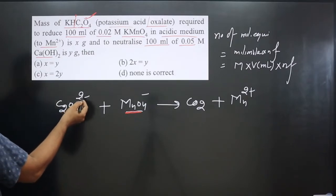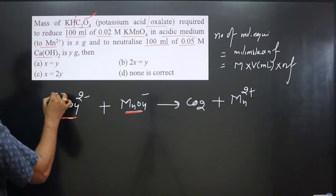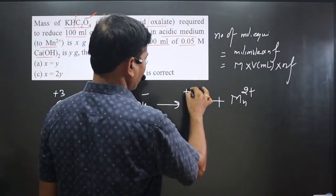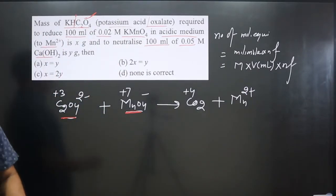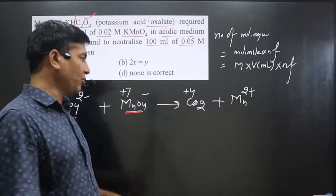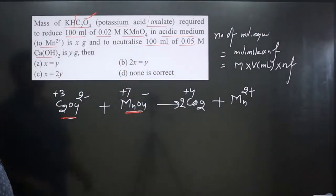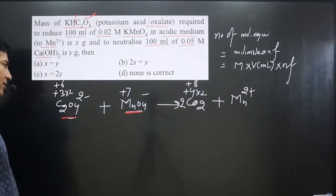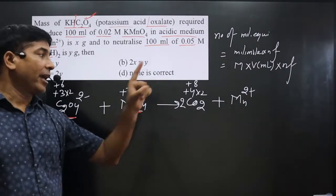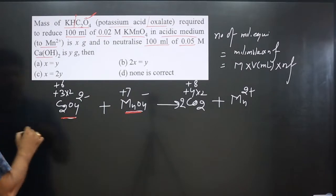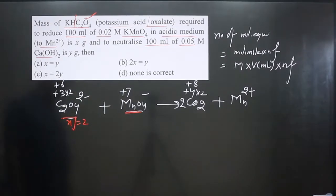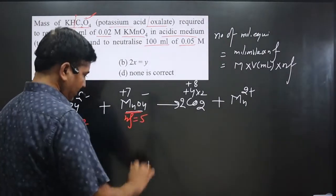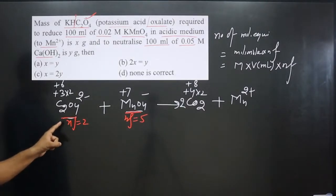To find n-factors, we write oxidation numbers of the same elements on both sides. For oxalate C2O4²⁻: carbon is +3, and in CO2 carbon is +4. Since there are 2 carbons on one side, 2×(+3) = +6 and 2×(+4) = +8. The difference is 8 − 6 = 2, so the n-factor of oxalate is 2. For permanganate MnO4⁻: Mn is +7 on the left and +2 on the right; 7 − 2 = 5, so the n-factor of KMnO4 is 5.